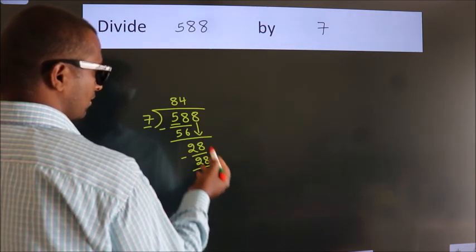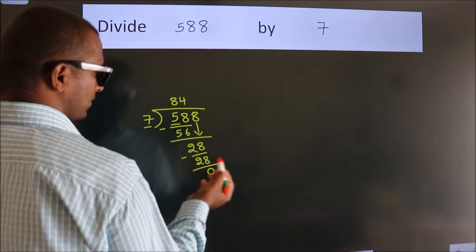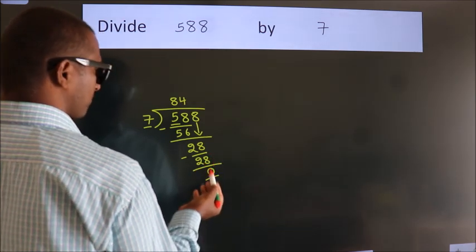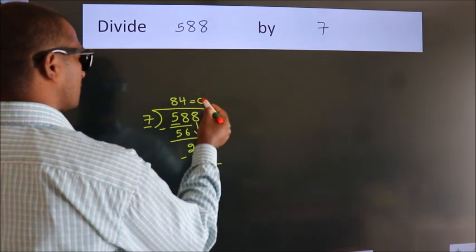After this, no more numbers to bring down. And we got remainder 0. So this is our quotient.